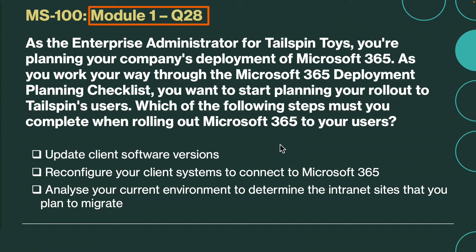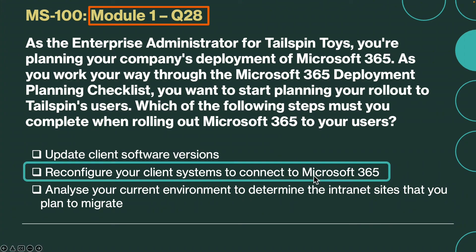Question number 28, the last question on this module. As the enterprise administrator for Tailspin Toys, you are planning your company's deployment of Microsoft 365. As you work your way through the Microsoft 365 deployment planning checklist, you want to start planning your rollout to Tailspin users. Which of the following steps must be complete when rolling out Microsoft 365 to your users? The correct answer is reconfigure your client systems to connect to Microsoft 365. When rolling out Microsoft 365 to your users, you must reconfigure your client systems — which is Office, Outlook, Outlook for Mac, and mobile devices — to connect to Microsoft 365.